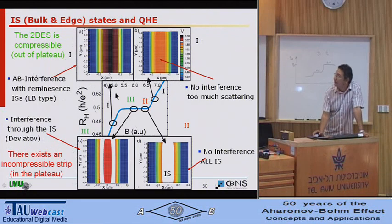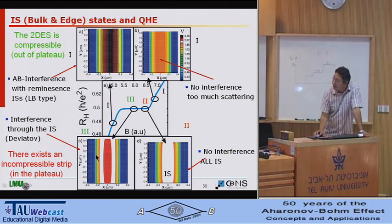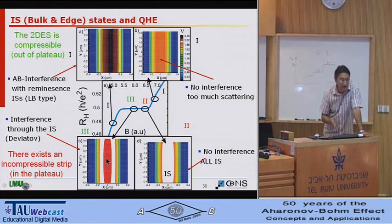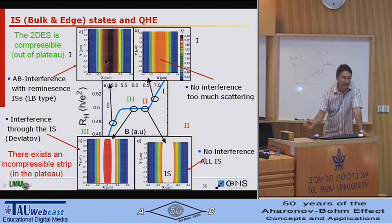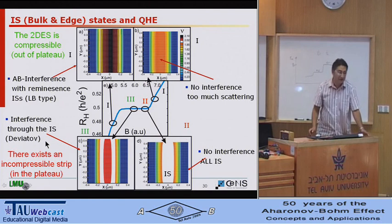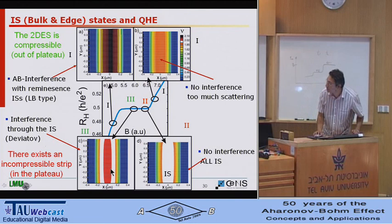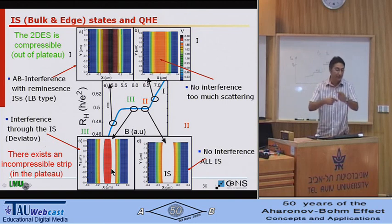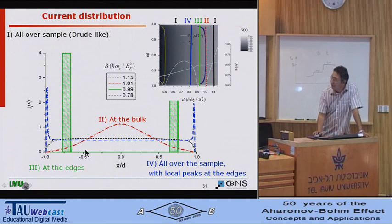So this will be the main picture saying that if I'm in the plateau, upper side, there will be no interference because the bulk is completely incompressible. So if there are two incompressible strips which are well developed, then there will be again no interference. Then there will be Aharonov-Bohm interference in some parts, what Bernd also told. And there will be interference through the incompressible strips, what Deviatov did. So with pushing, you can put some electrons from here to there. So you are pushing and then trying to interfere the properties of them.